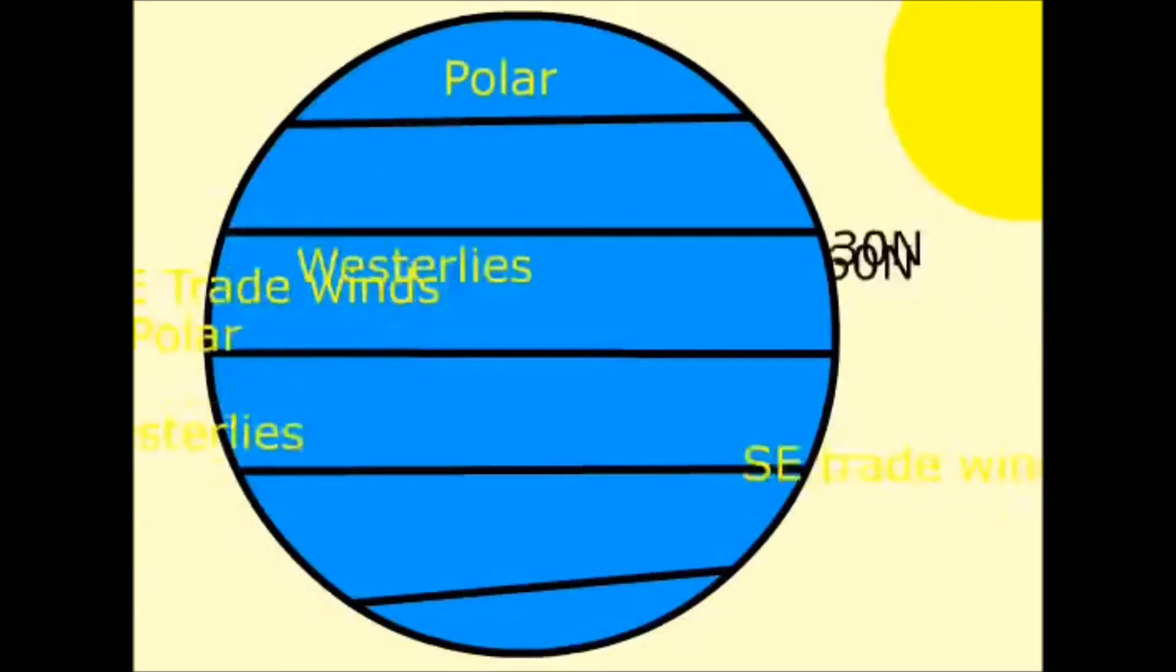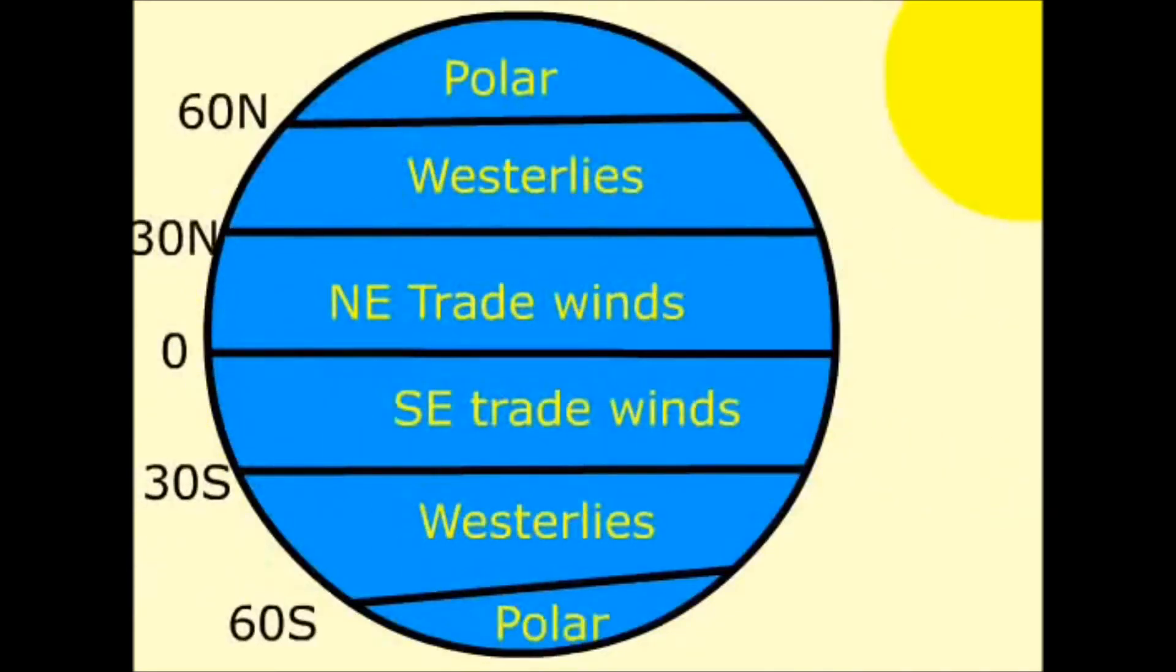Now, because of the Coriolis effect, the areas of Earth have certain wind patterns and currents that always flow a certain direction. Here are the names.